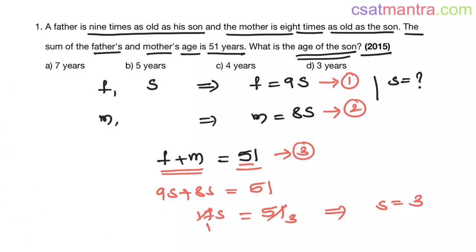So the age of the son is 3. So d is your answer. Application oriented problems from ratios and proportion chapters will be very easy. You just have to write down all the conditions given and solve the equations.